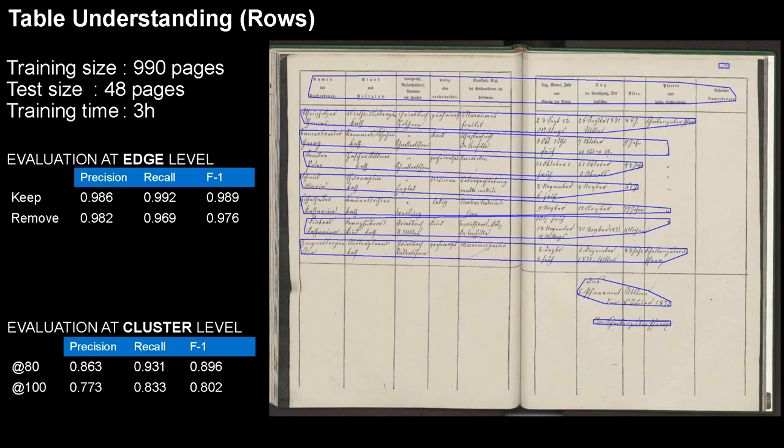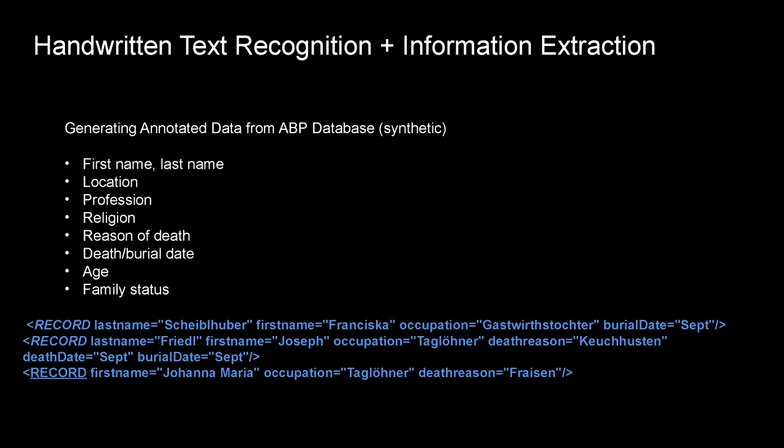When we have this set of table rows, the next step is to extract the information from each record. Here is a list of items we would like to extract: the name of the people, the location, the profession, the religion, the reason of death, the date of death, the burial, the age, and the family status. The outcome of this information extraction is basically XML files where for each record you have a specific value for the different fields you want to extract.